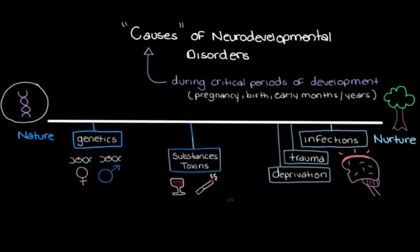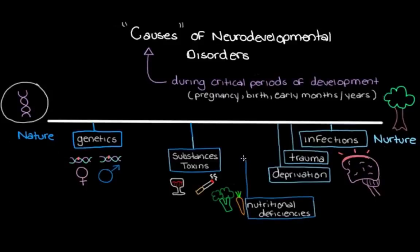Or maybe if mom doesn't get all of her important vitamins and minerals — for example, if she doesn't get enough folate, one of our B vitamins, while pregnant. Nutritional deficiencies can also result in a neurodevelopmental disorder, because a fetus relies on getting its nutrients from mom to grow properly. So those are the main types of events or conditions that can cause neurodevelopmental disorders. Now let's go over some specific examples and talk more about that term cause.